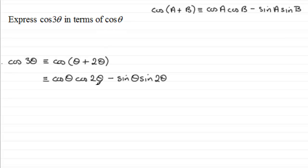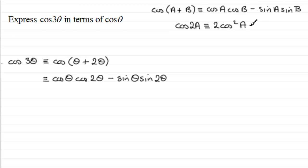We need to express cos(3θ) purely in terms of cos(θ), so we need workarounds for cos(2θ) and sin(2θ). You should be familiar with the double angle formula for cos(2A). There are three versions, but we only want the one involving cosine: cos(2A) = 2cos²A − 1. In place of cos(2θ) we can write 2cos²θ − 1.